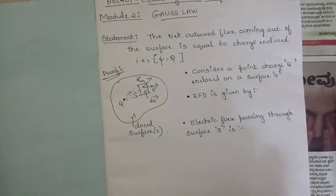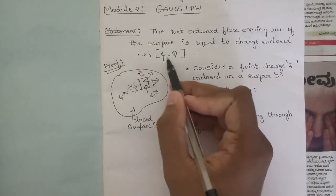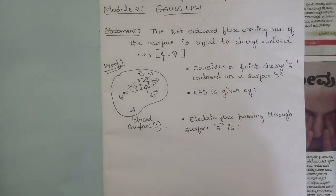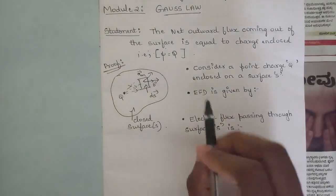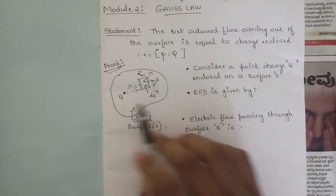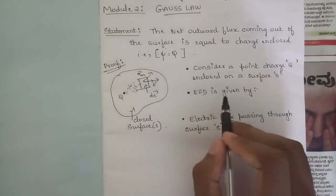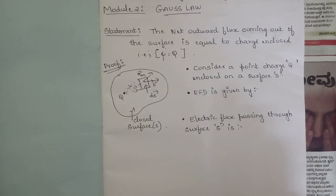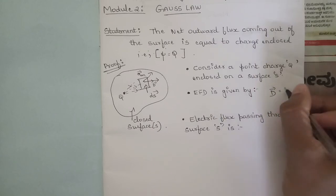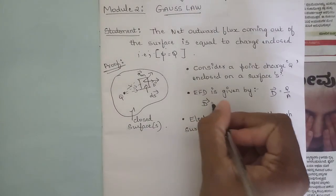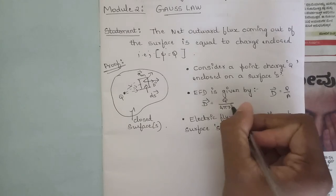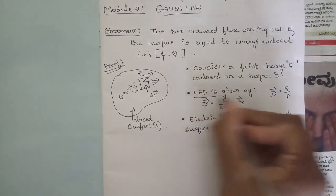In general, we can write psi is equal to Q. We need to prove that psi equals Q. Consider a point charge Q enclosed within a surface. The electric flux density, EFD, is given by D equals charge per unit area. In this case, D is equal to Q divided by 4πr² times unit vector ar.